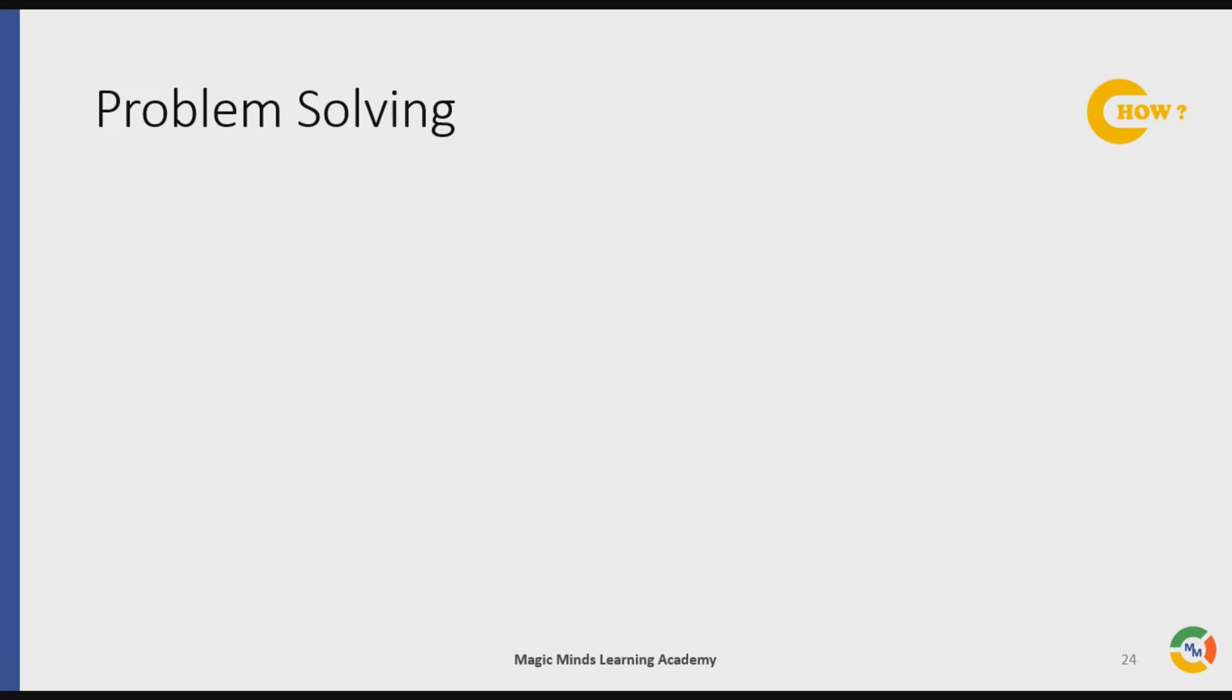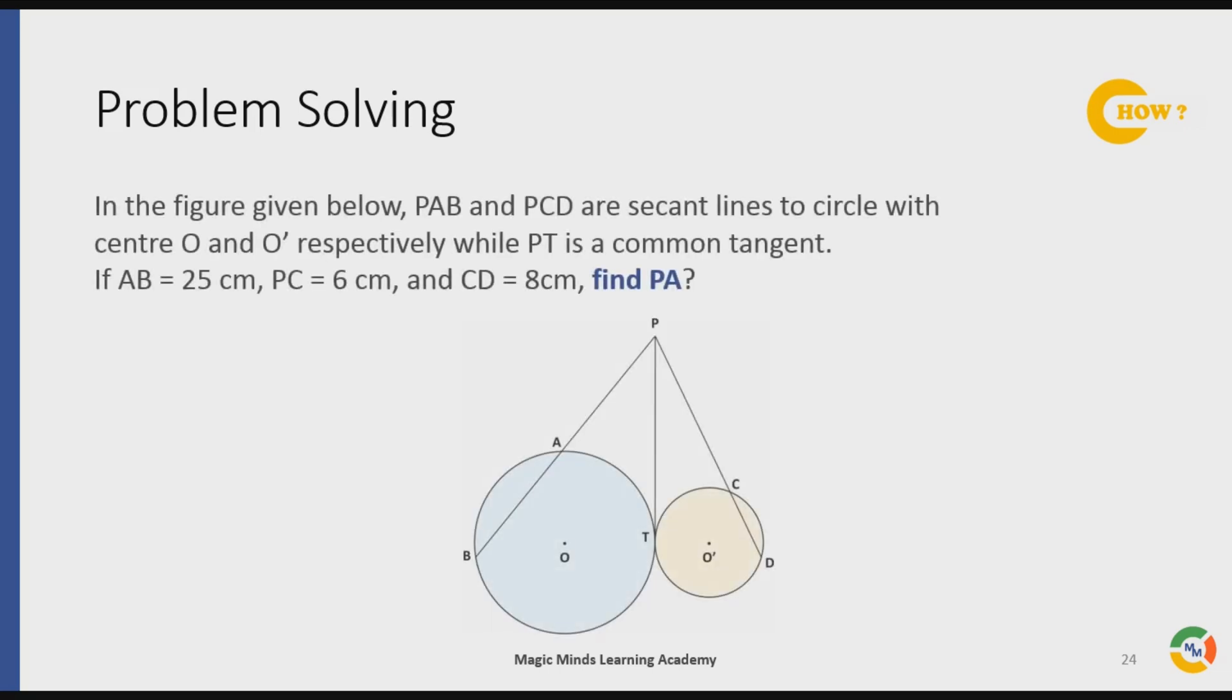Here is the problem. In the figure given below, PAB and PCD are secant lines to circles with center O and O' respectively, while PT is a common tangent.